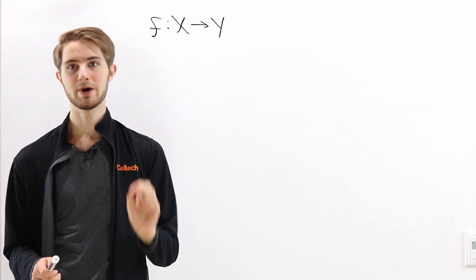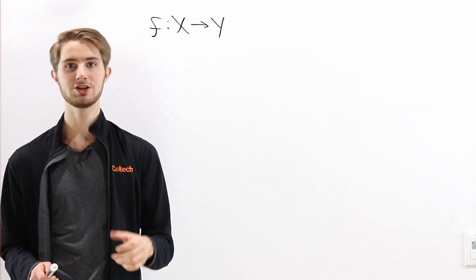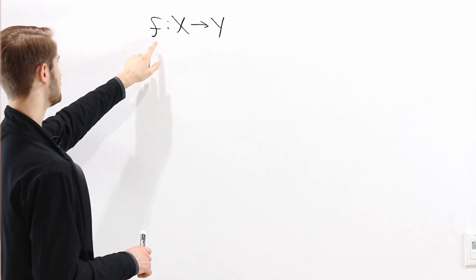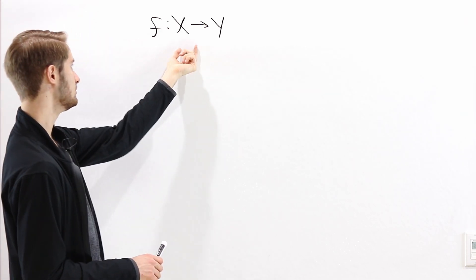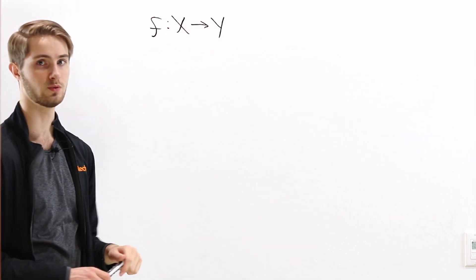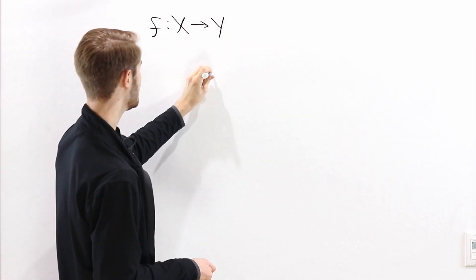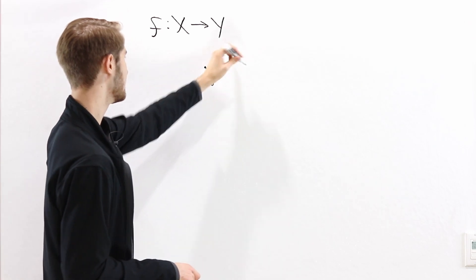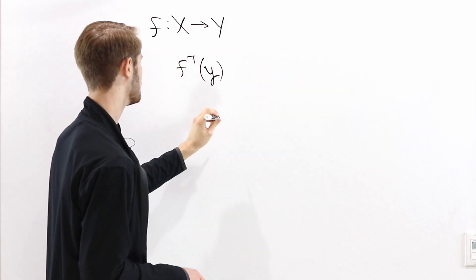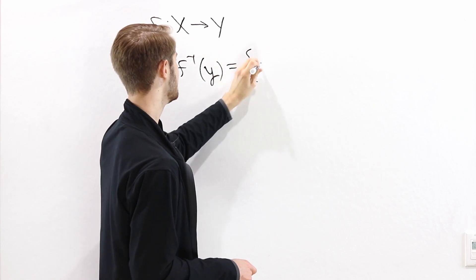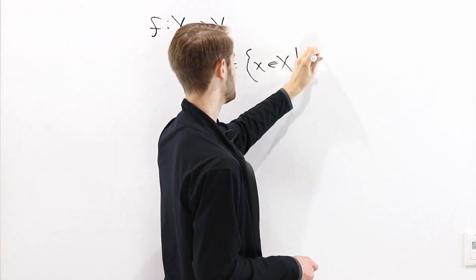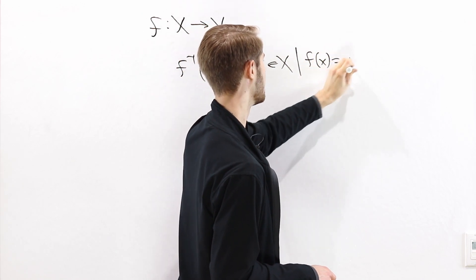We are going to prove that every bijective function has a two-sided inverse. To do that, let's suppose we have some function f, which takes inputs from the domain X and gives us outputs from the codomain Y. If we have some element little y of this codomain, we can define the preimage f inverse of y as the set of all inputs from the domain X such that f of x equals y.